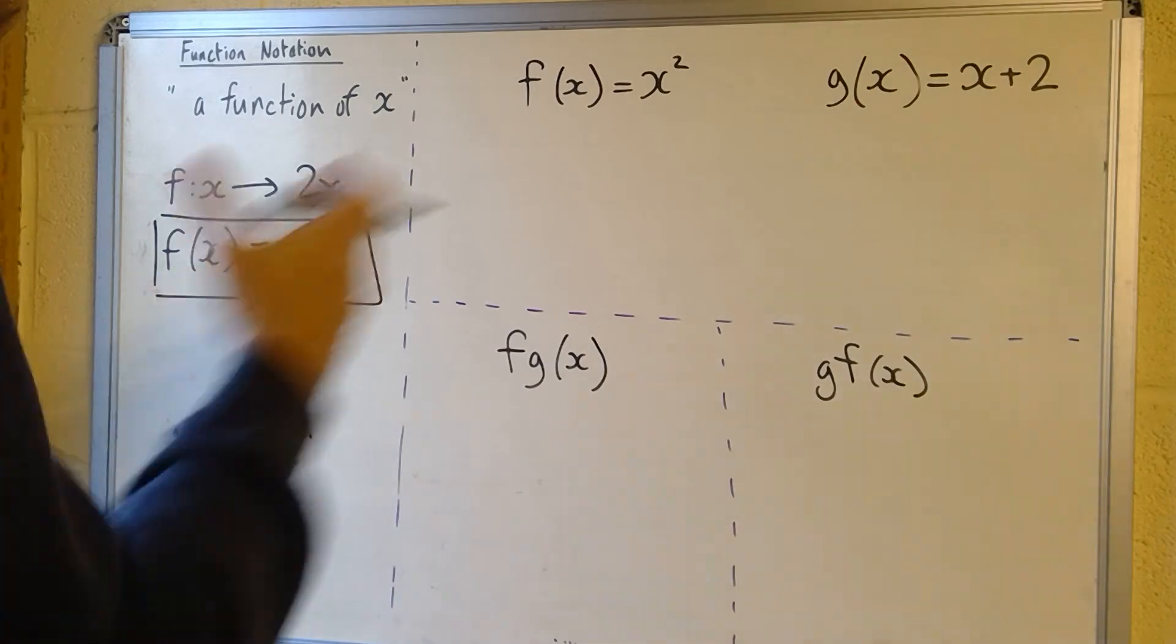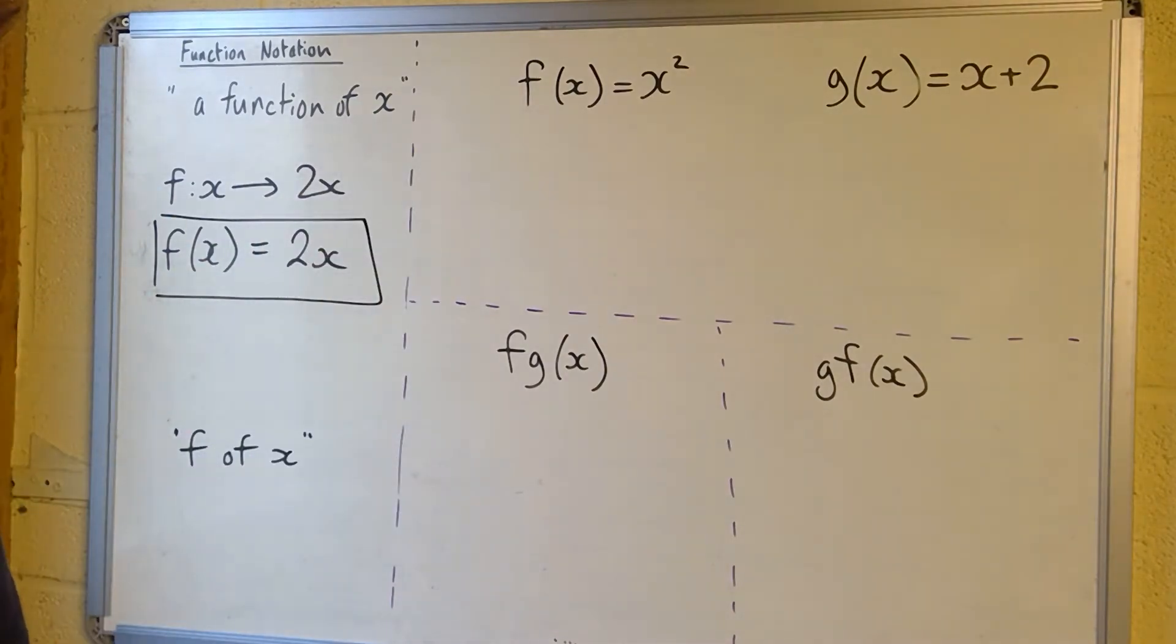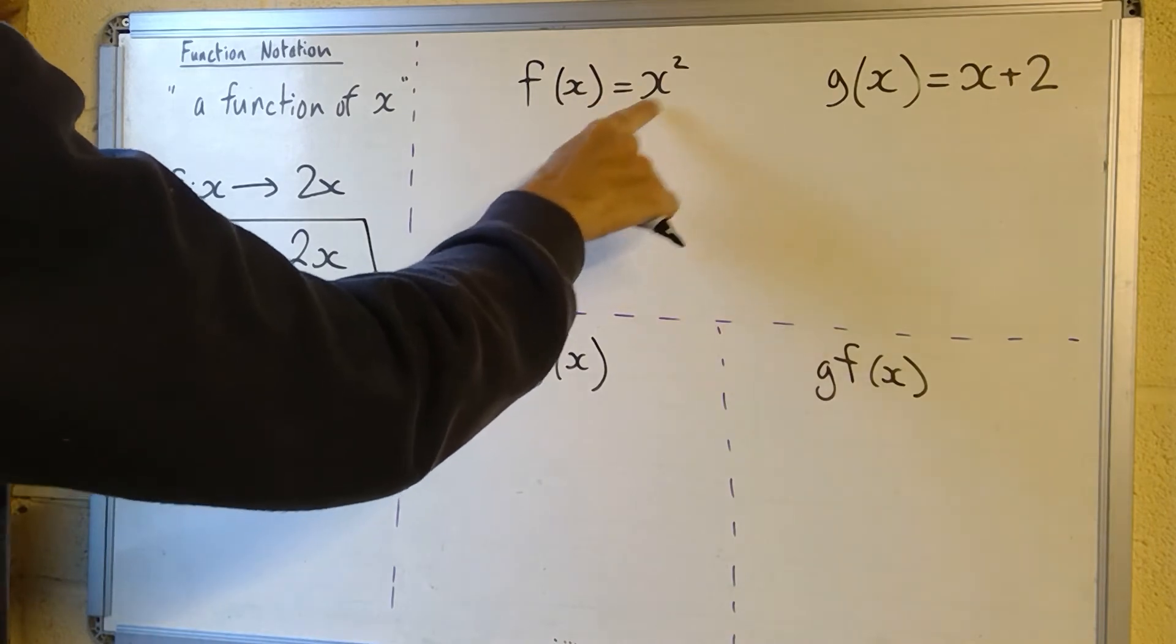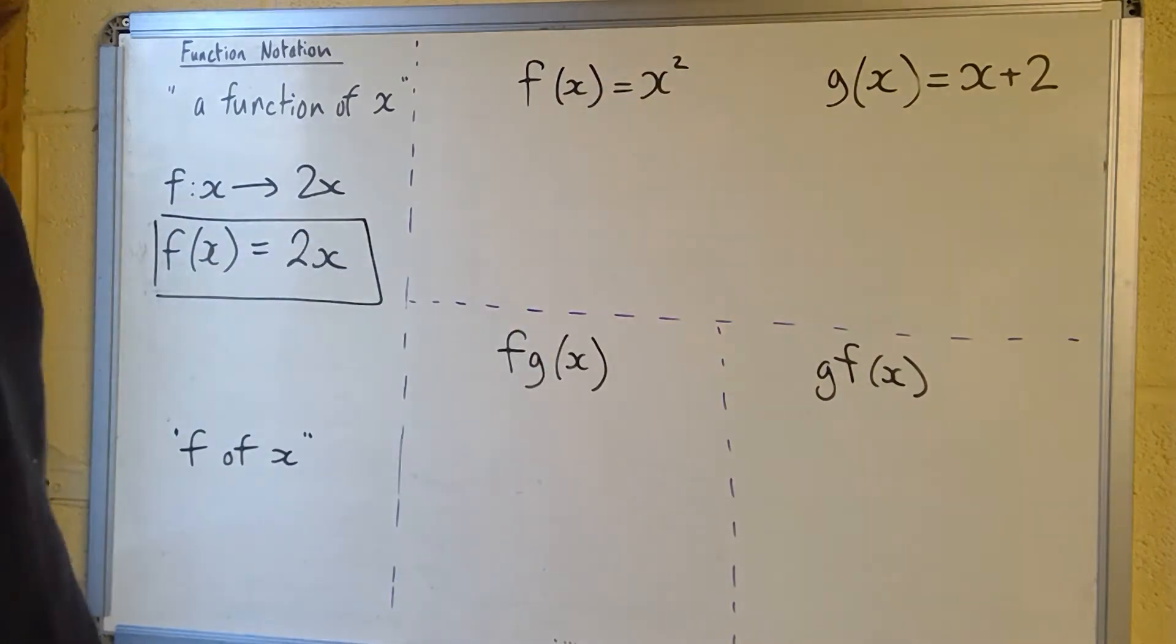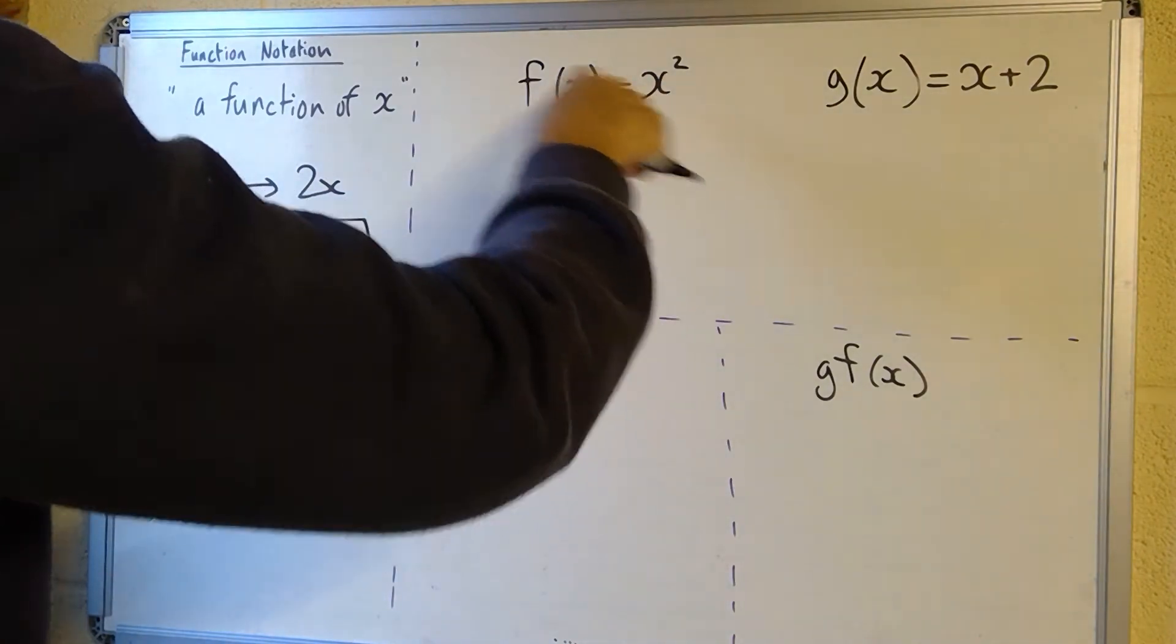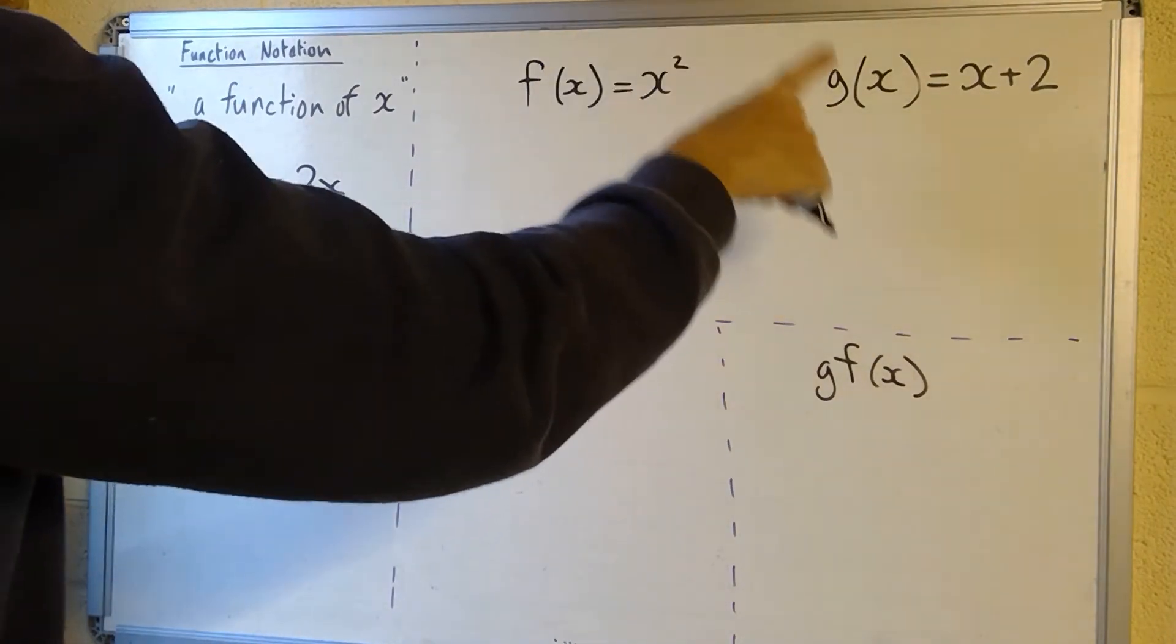I'm going to go with this notation here, but you may see others. Really we're just going to do some basic substitution. So I've got two examples here: f of x equals x squared, so the function of f equals x squared, and the second one, we often use the next letters in the alphabet, so we started with f so I'm going to use g next.